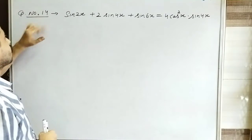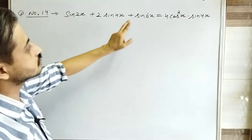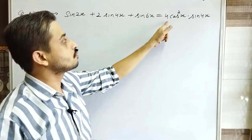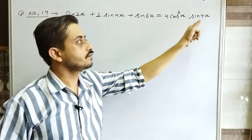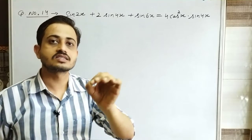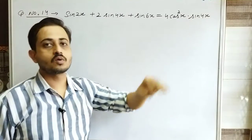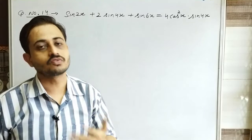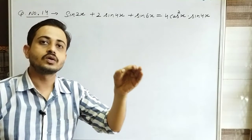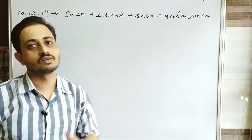Question Number 14: sin2x + 2sin4x + sin6x is equal to 4cos²x · sin4x. Here the terms on the left are given in sum form, and on the right hand side you have to prove it in product form. So which identity will we use? Sum to product — the identities that convert sum into product.